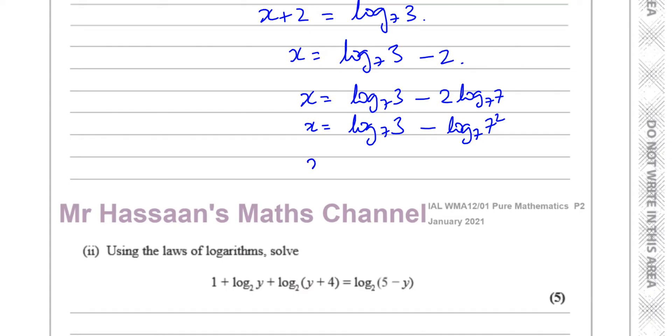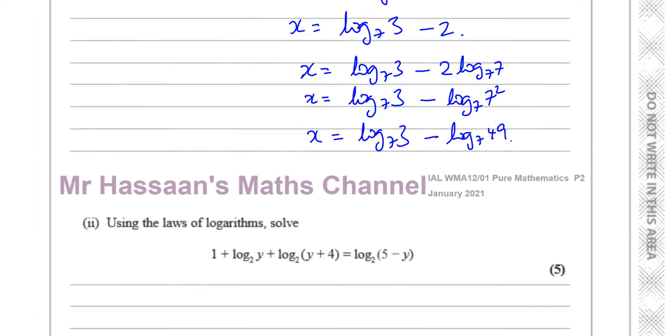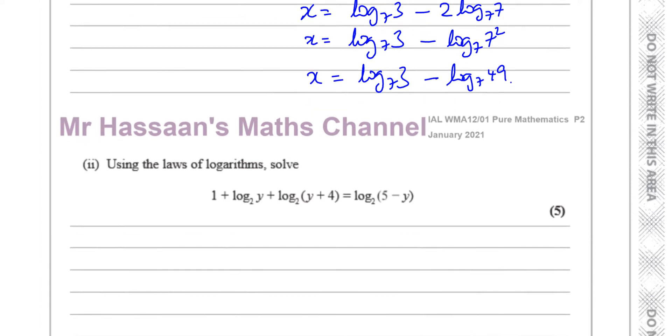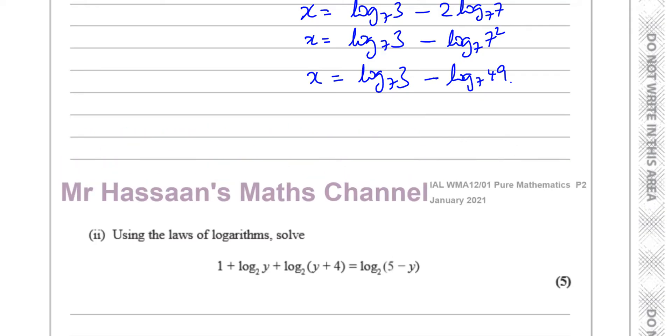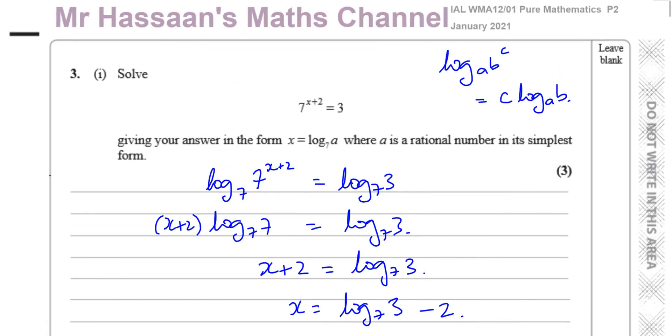So then I'm going to have x equals log to the base 7 of 3 minus log to the base 7 of 49. And then finally, I can combine these together into one fraction. So I can say this is going to be x equals, using the subtraction, log to the base 7 of 3 over 49. And there we have the answer to part 1 of question number 3.